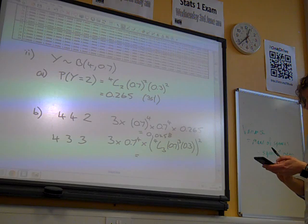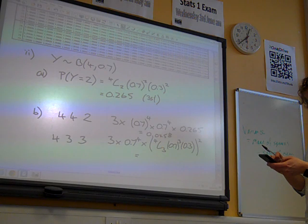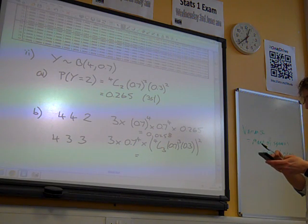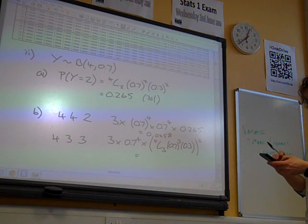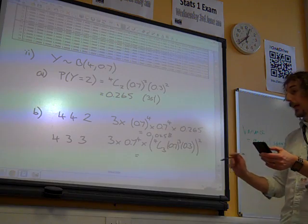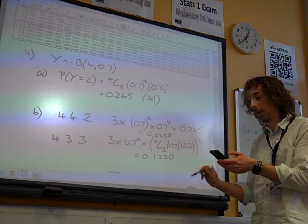4C3 0.7 to the 4, 0.0458. Square that. I get 0.1220.